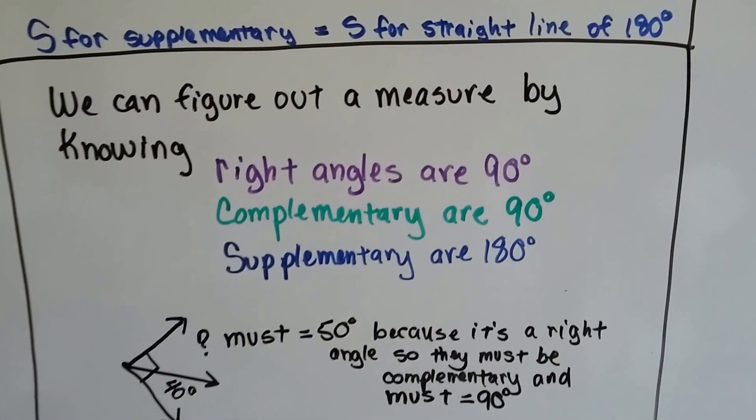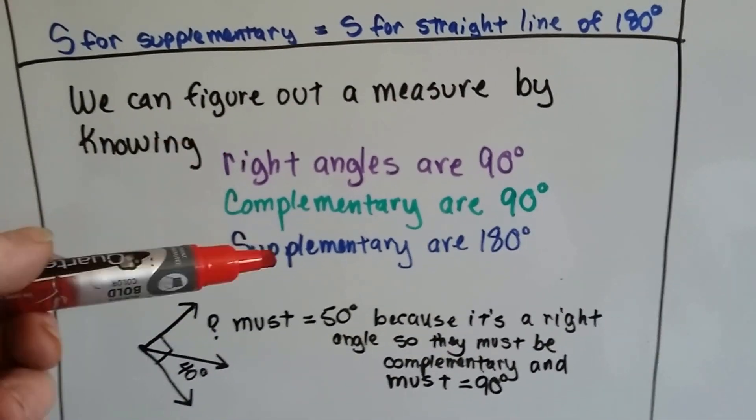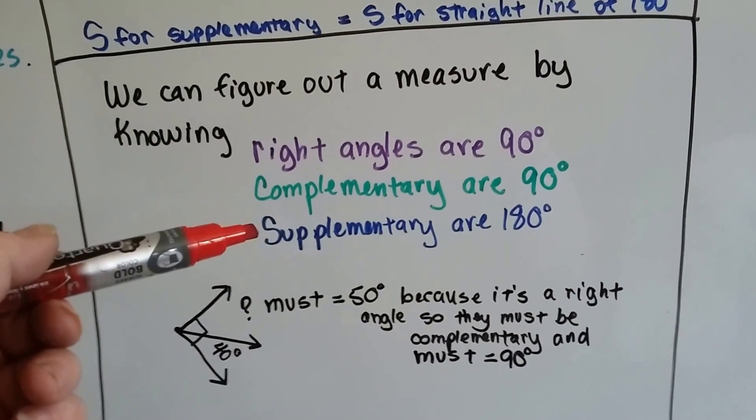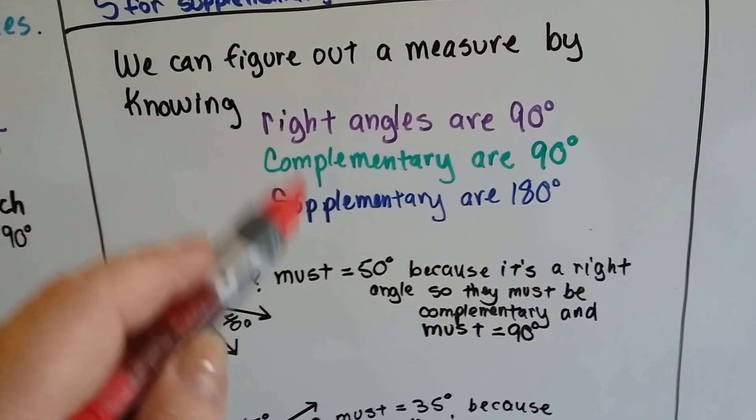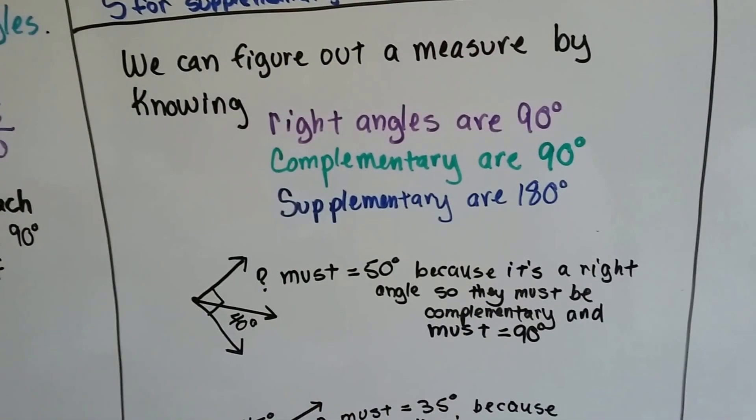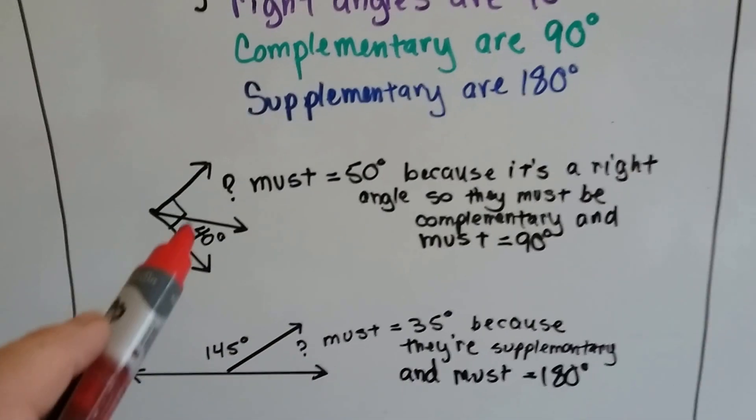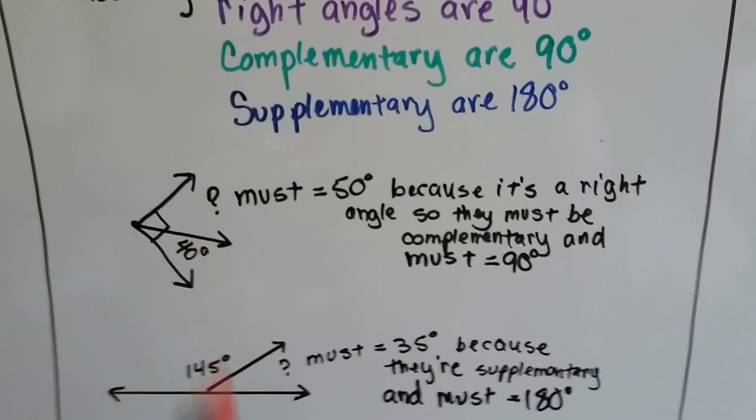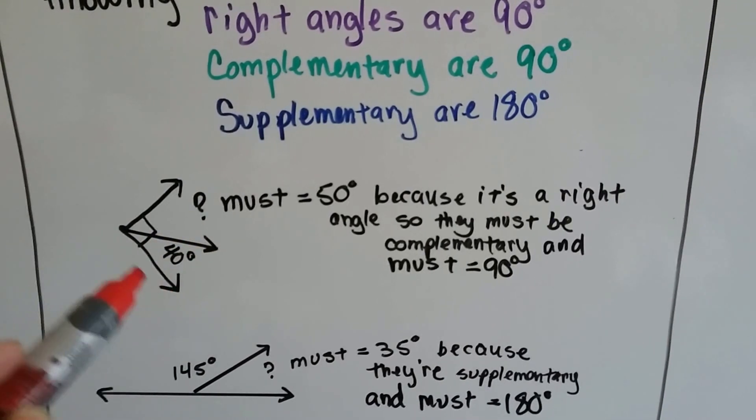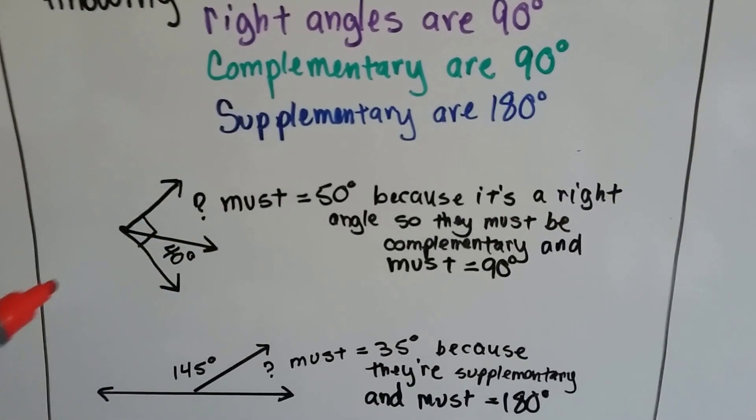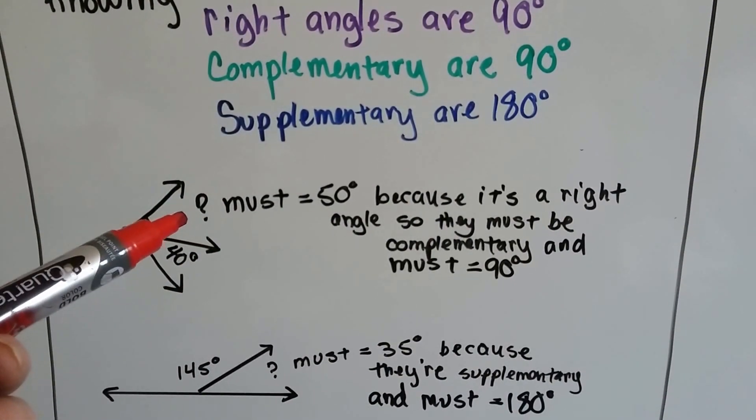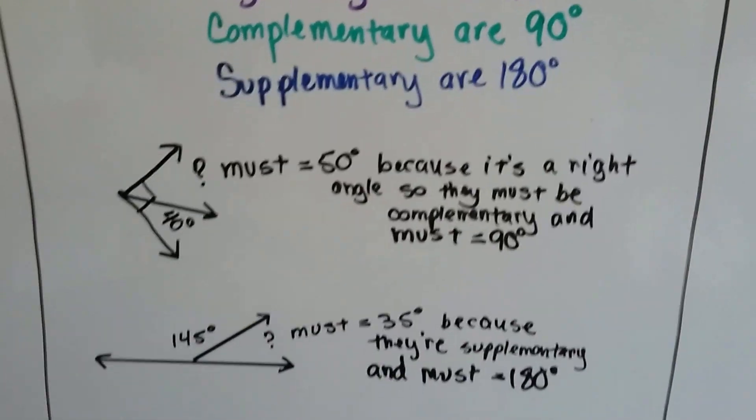Now we can figure out a measure by knowing these facts. We get these memorized. Right angles are 90 degrees. Complementary are 90 degrees. Supplementary are 180. Now by knowing these facts, we could find out the measures of angles. Here's a right angle. If this is a 40 degree angle, then what must that one be? Well, it must be 50. Because it's a right angle, we can see the box. And so they must be complementary and they must equal 90 degrees. So what does the 40 need to be 90? It needs a 50. It's got to be a 50 degree angle.